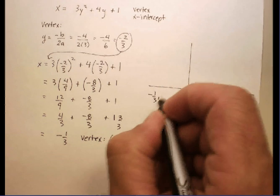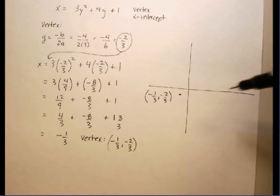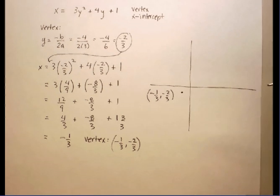Negative 1 third, negative 2 thirds. It doesn't make any difference where that is exactly proportion-wise, as long as I label it correctly.